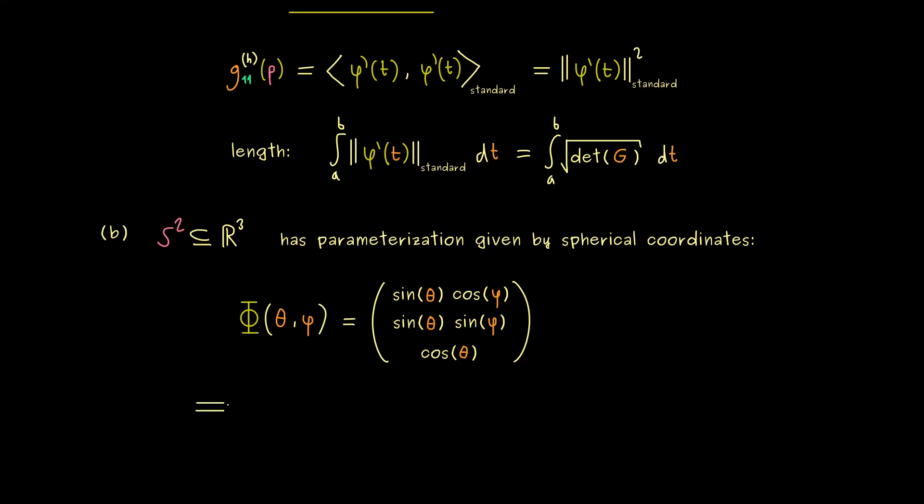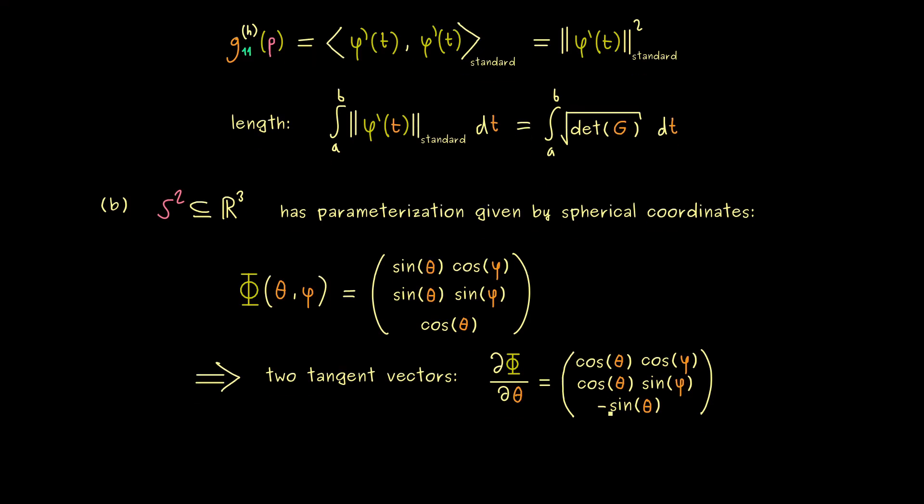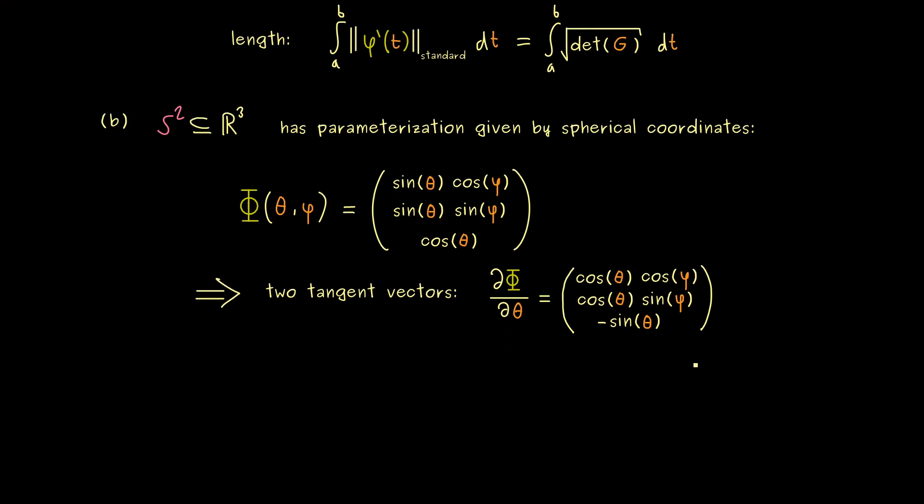So these are the spherical coordinates, where the radius is set to 1. And then we can conclude that we have exactly two tangent vectors. As we have discussed before, the only thing we need are the partial derivatives. So not a problem at all. You just need to know the derivatives of cosine and sine. So what we get with respect to theta are cosine of theta in the first two components, and minus sine of theta in the last component. And with respect to phi, we first get zero in the last component. And then sine and cosine exchanged in the first two components, but again with a minus sine here.